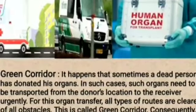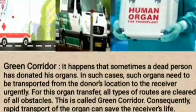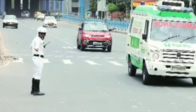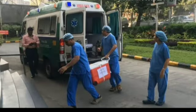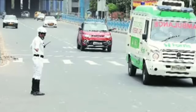A green corridor is a special route managed such that all traffic signals on the route from the hospital where the organs are harvested — that is, surgically removed from the donor's body, such as a kidney, liver, or pancreas — to the hospital where transplantation is to be done are cleared. While using the green corridor method, all red signals on the way are skipped, thereby speeding up travel time by several minutes, which is enough to save someone's life.